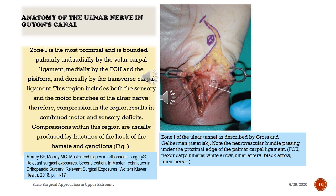Zone 1 is the most proximal and is bounded palmarly and radially by the volar carpal ligament, medially by the FCU and the pisiform, and dorsally by the transverse carpal ligament. This region includes both the sensory and the motor branches of the ulnar nerve; therefore, compression in this region results in combined motor and sensory deficits. Compressions within this region are usually produced by fractures of the hook of the hamate and ganglions.